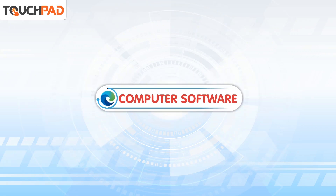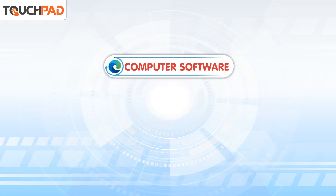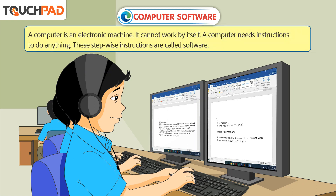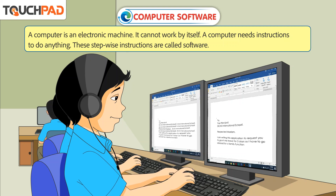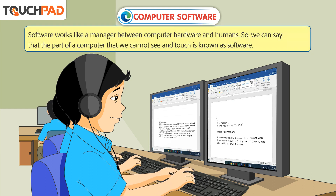Computer Software. A computer is an electronic machine. It cannot work by itself. A computer needs instructions to do anything. These stepwise instructions are called software. Software works like a manager between computer hardware and humans.